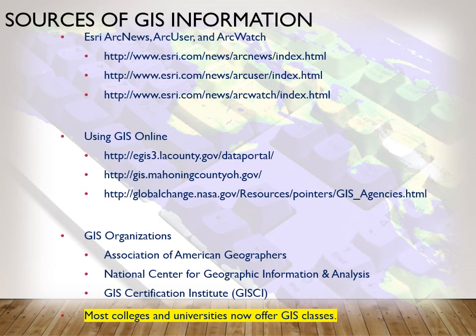So where do we get data? This course, we're not going to be focusing on going out and getting data. But in all of your other core GIS courses after this, there will be some component of getting data. I want to put out some information on data sources. We have Arc News, which comes out every season — about every three months — and we have copies in the GIS lab. You could also use ArcGIS Online, and there are various organizations that deal with GIS. For example, the GIS Certification Institute is something you might want to look at when you're in the workforce and want to get a credential as a GIS expert.